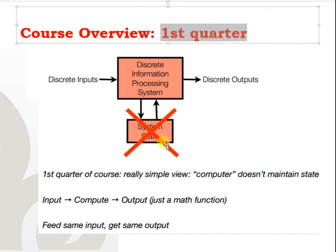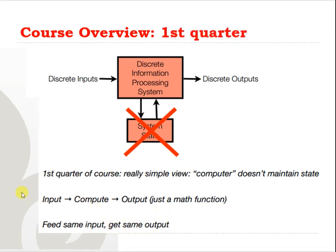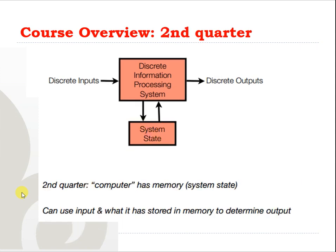First, in the first quarter of the course, we will start by neglecting the system state. We assume there is no system state, so we'll have a really simple view of a computer that doesn't maintain state and has no form of memory. The computer will not remember what has happened in the past. When you provide an input, some computation will be performed and an output will be generated — like a math function. If you feed the same input, you will get exactly the same output regardless of when or in what situation you do it.